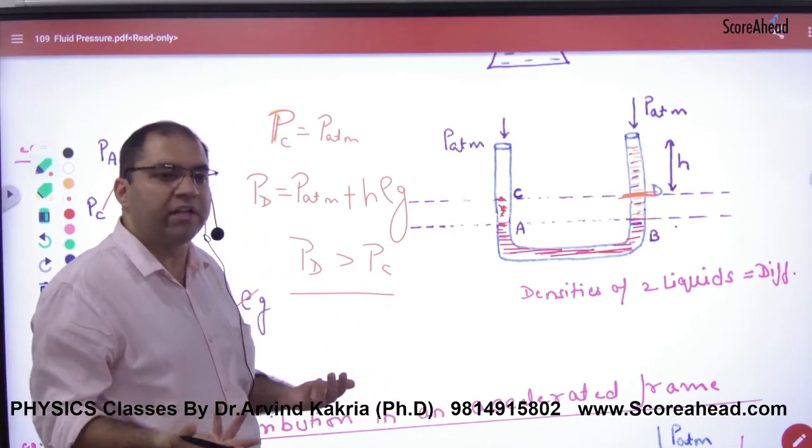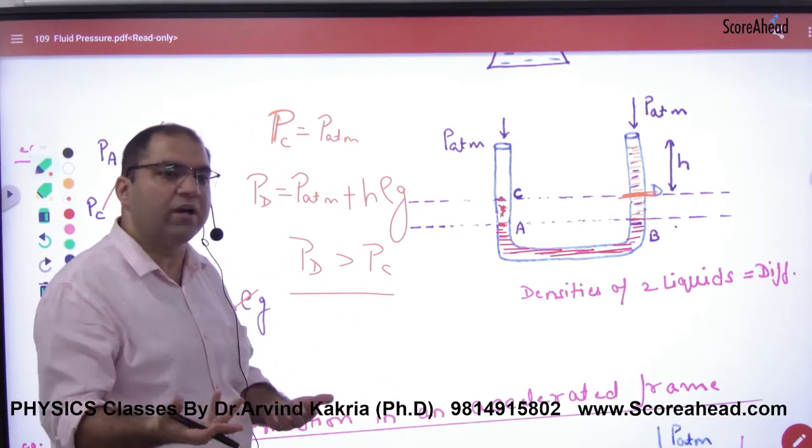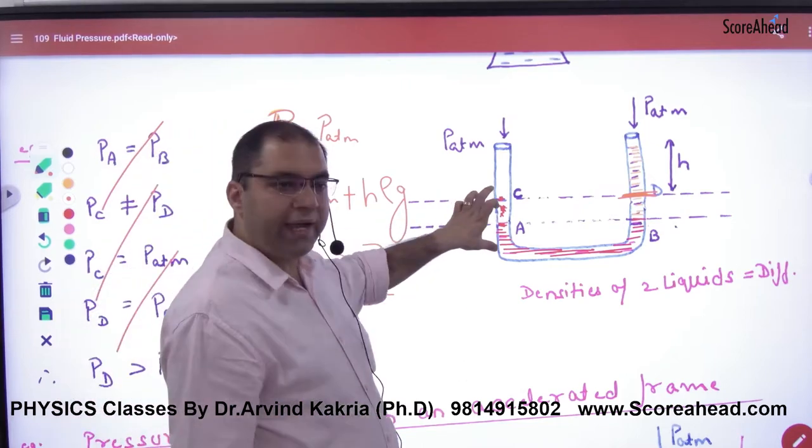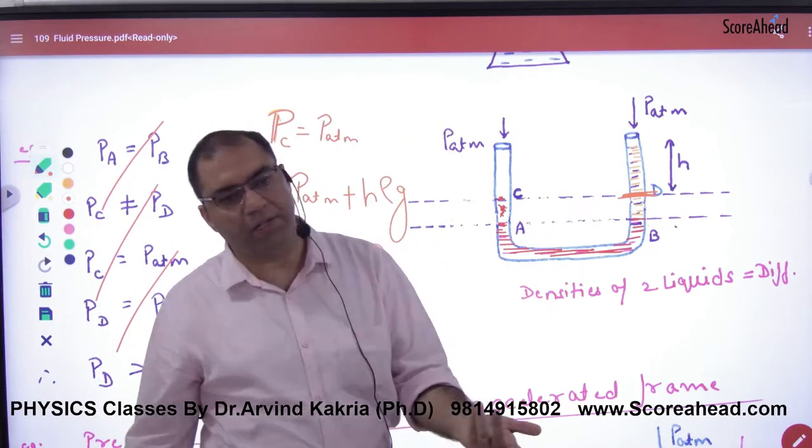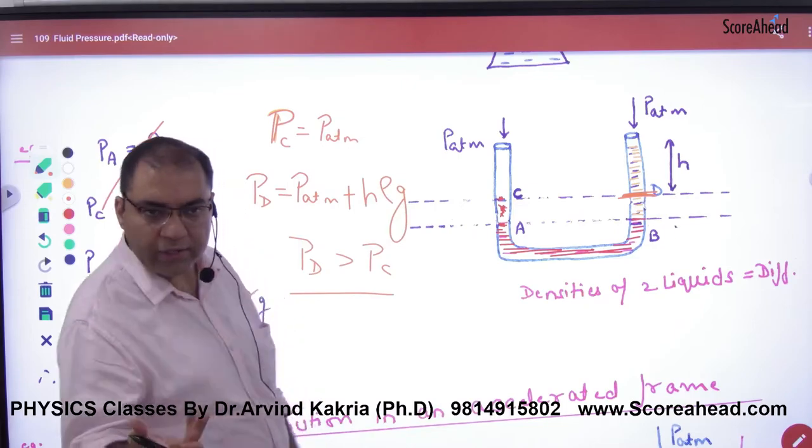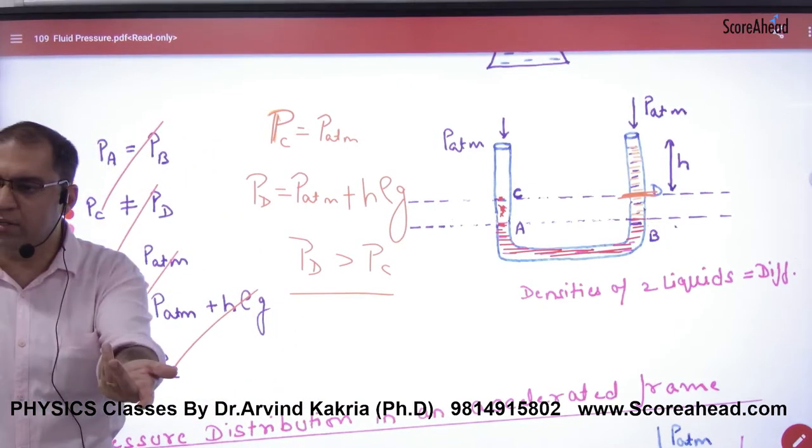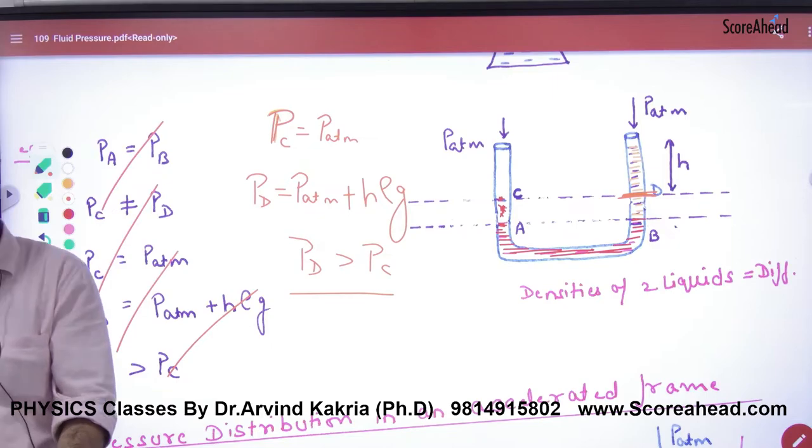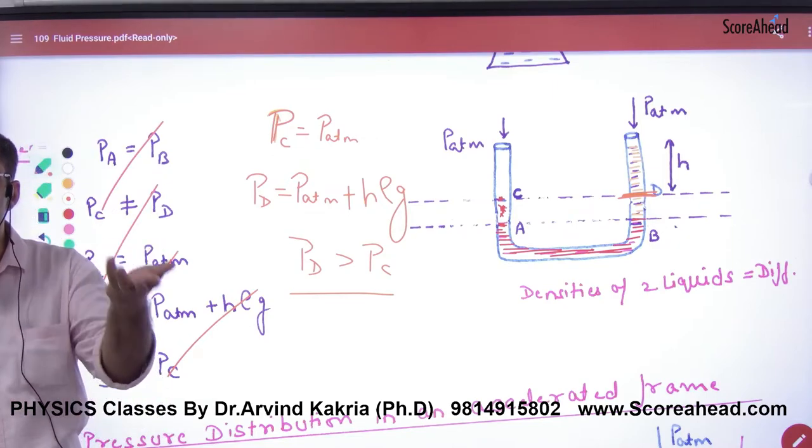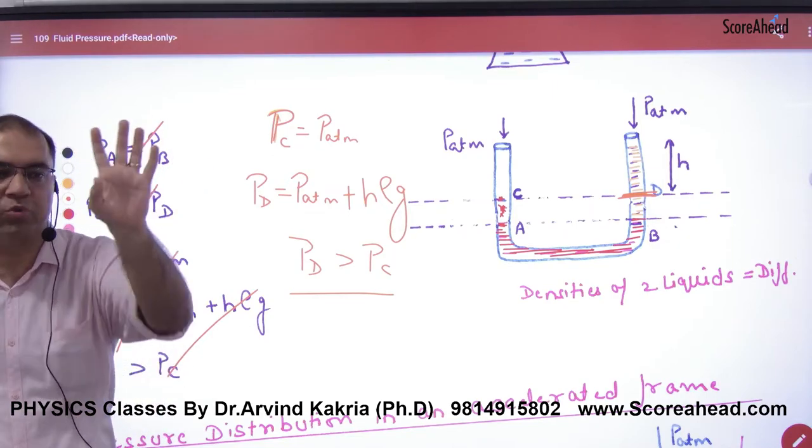The point is, to find pressure at any point, you have to give P atmospheric plus H-ρg. So this is the theory. You don't need to remember anything complex, just how to calculate pressure at any point: atmospheric pressure plus H-ρg.